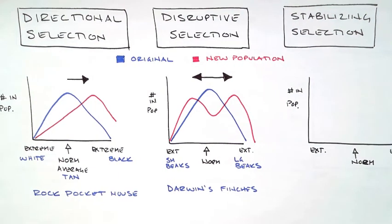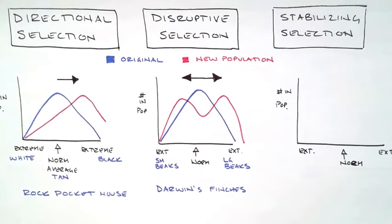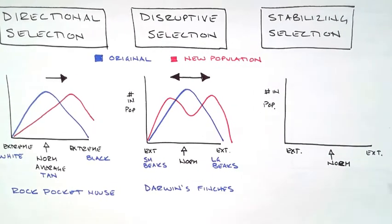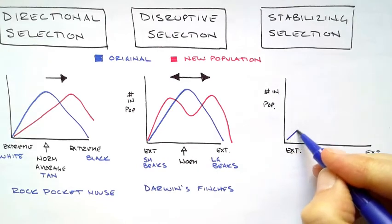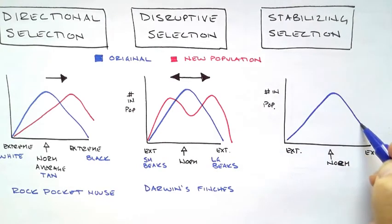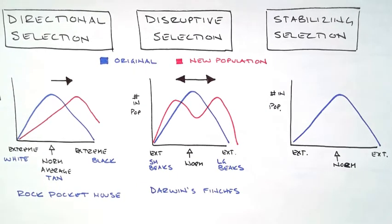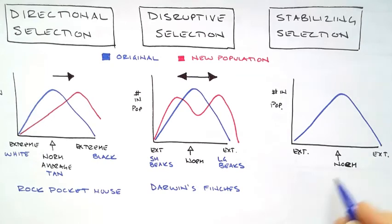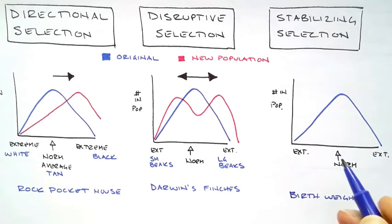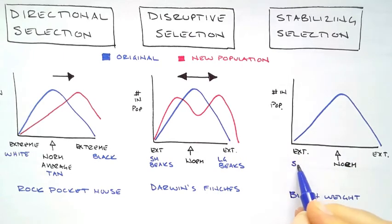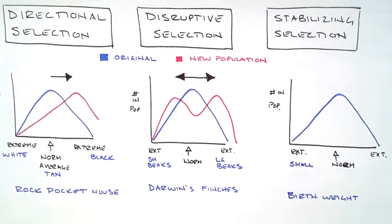The last one is called stabilizing selection. I'm just going to move this over a little bit. Stabilizing selection—again, this is my original population. Okay, and this is a good one for—this is birth weight. Okay, so this is my example is birth weight.